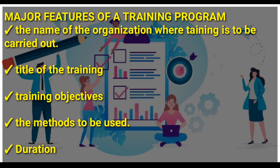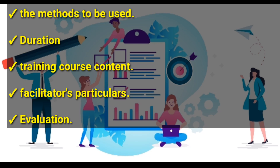Another feature is the duration, which looks at the time required for the training program. Then we have training course content, which should be in line with the training needs and objectives earlier established. It shows what will be covered and the different activities that will take place during the training, depending on the objectives set by both the learner and the trainer.